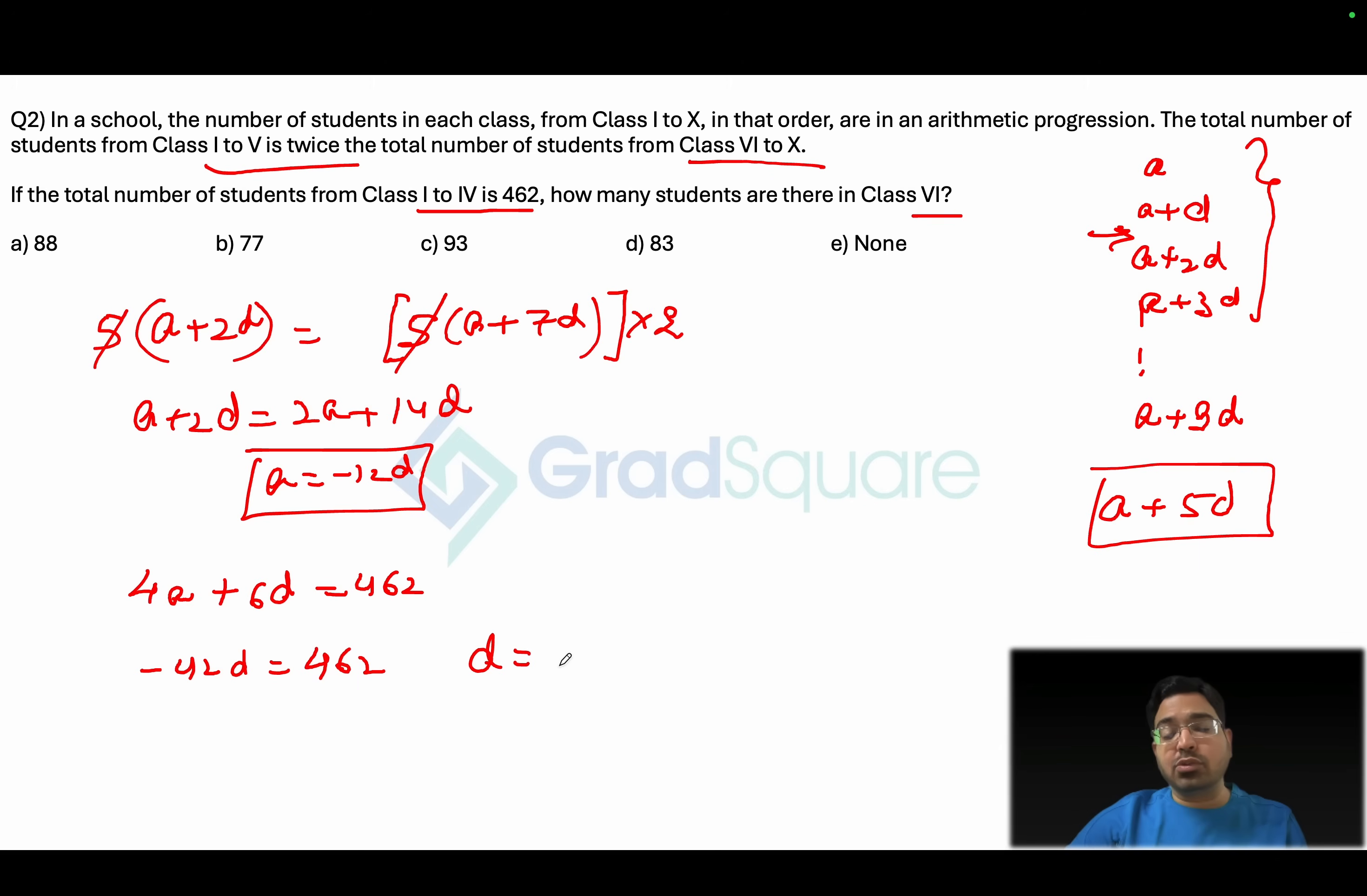So the common difference will turn out to be 462 divided by 42 and a negative of that. So if you look at this, this will turn out to be 42 into 1 and then 11. So minus 11 turns out to be the common difference.